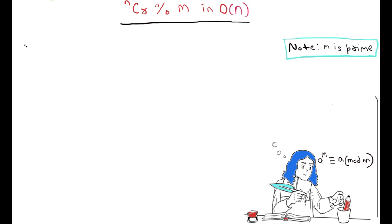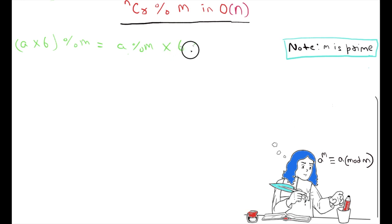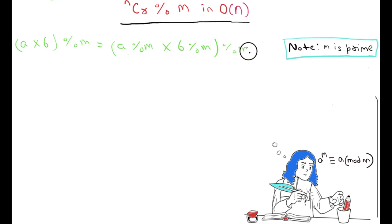If we have to do A multiply B modulo M, then this can be written as (A modulo M) multiply (B modulo M) modulo M.